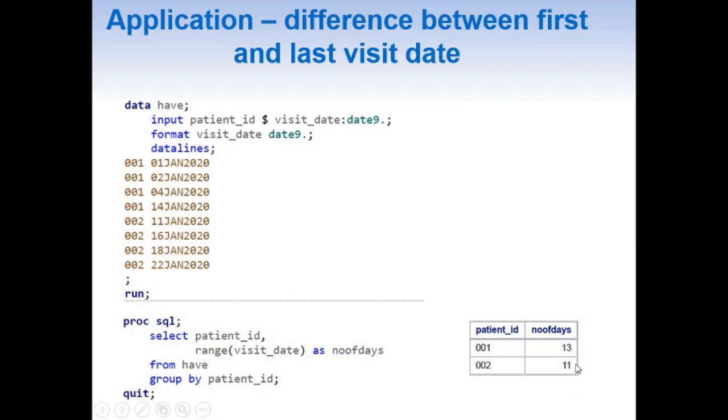In the result, we get the number of days—that is, the difference between the first and last visit date for each patient ID.